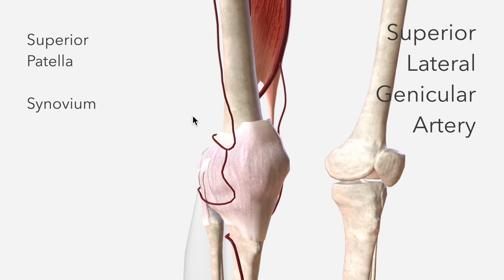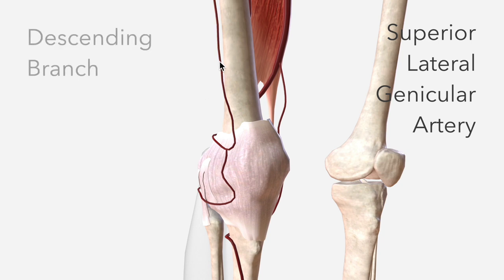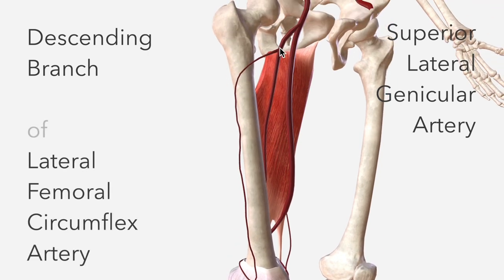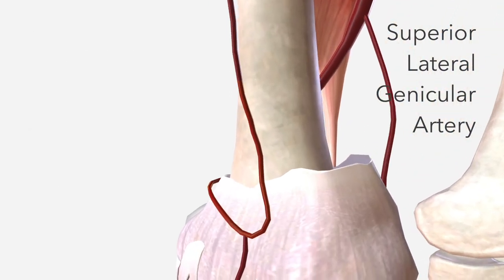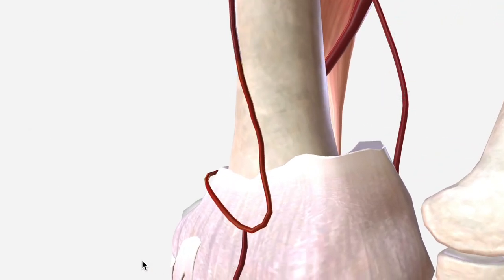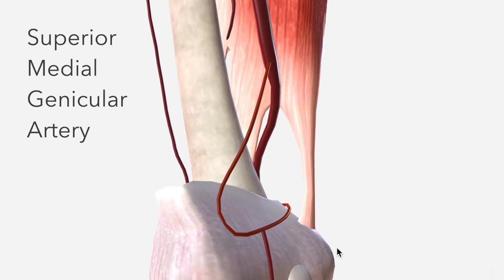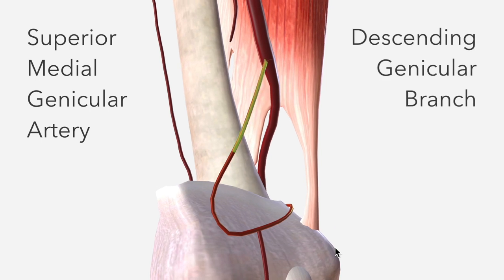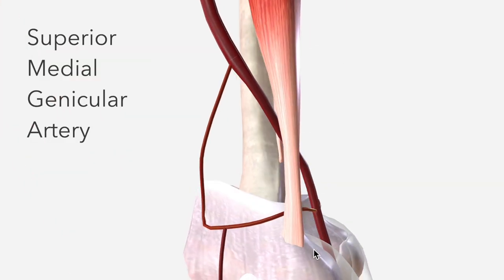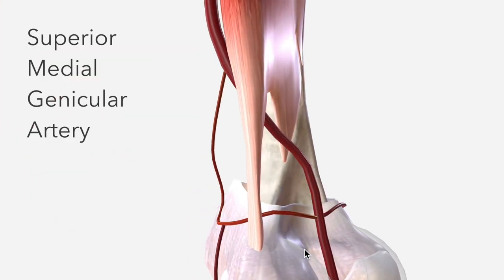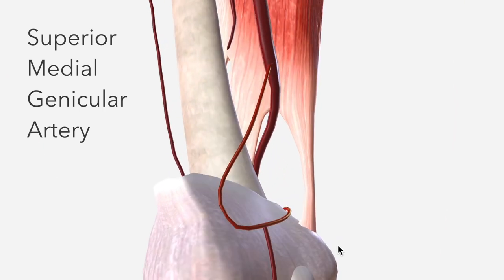It supplies the superior patella as well as some of the bone and synovium nearby — synovium being the jelly-like connective tissue which lines our articular surfaces. The superior lateral genicular anastomoses with the descending branch of the lateral femoral circumflex artery, which we spoke about in the video on the femoral artery. On the other side of the knee, we have the superior medial genicular artery, which anastomoses with the descending genicular branch from the femoral artery. It supplies the same structures as the superior lateral genicular, just on the opposite side of the knee.